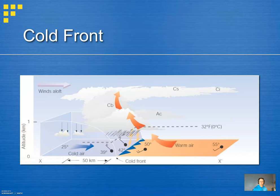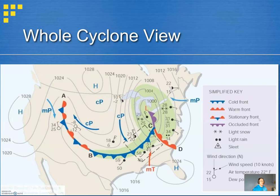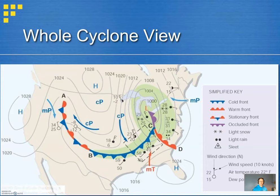With mid-latitude cyclones, in the area between the warm front and cold front — the warm sector of the cyclone — we often have sparse precipitation. This is because there isn't as much of a present lifting mechanism. We can get some daytime heating that can help initiate showers and thunderstorms in the warm sector, but there's no clear lifting mechanism to force widespread precipitation within it.